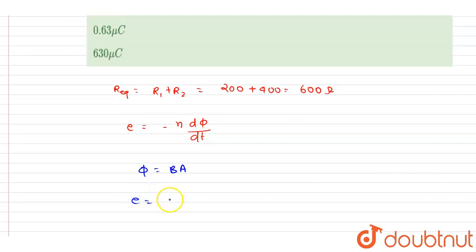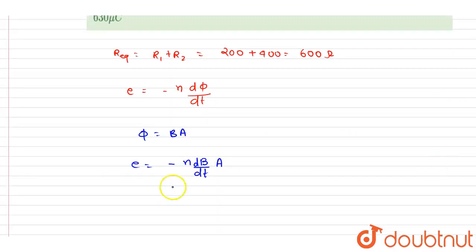From here I can write down the E equals number of turns times the rate of change of magnetic field. Area is constant here. This will be the induced EMF. And in the question, charge flown is asked. So because of this induced EMF, the current will flow. That is, I will write down I times R equivalent.